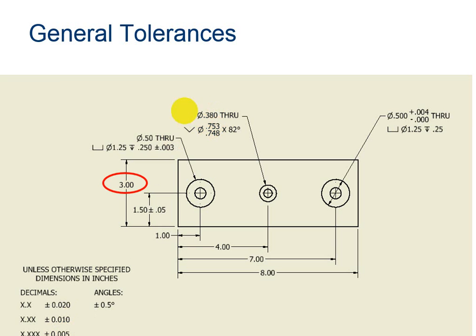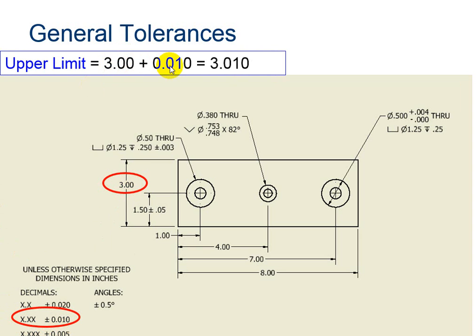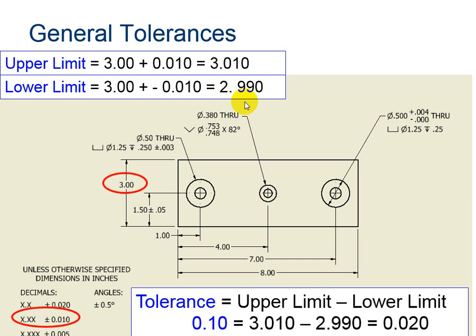Notice in this example we have, let's look at 3. It has two decimal places. So we're going to use the key with two decimal places. Its allowable amount of tolerance is positive or negative 1 one-hundredth. So my upper limit would be 3 plus 1 one-hundredth, making it 3.01. My lower limit is 3 minus 1 one-hundredth, and so that would make my lower limit 2.99. Overall, my total tolerance is 2 one-hundredths, because it is 1 one-hundredth in one direction, and 1 one-hundredth in the other direction.